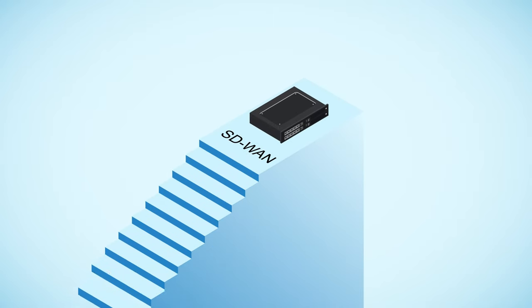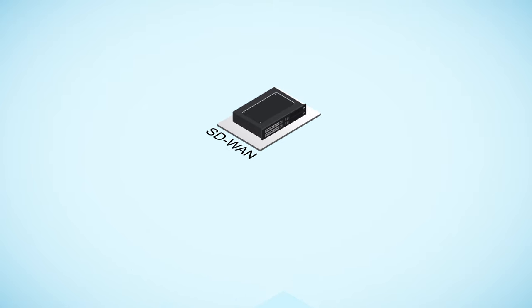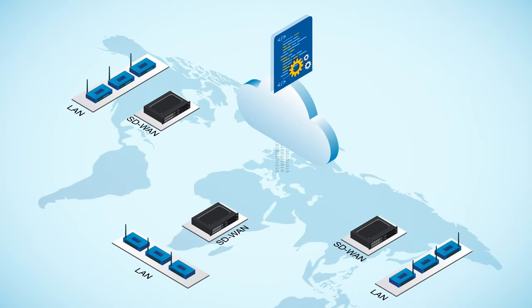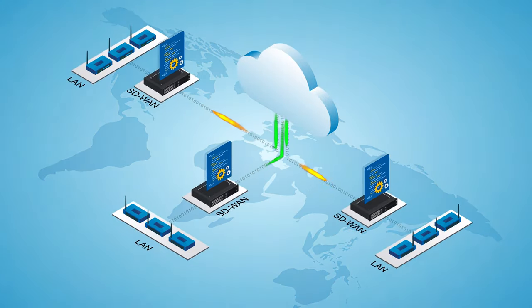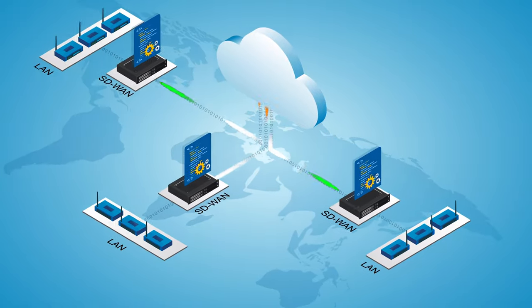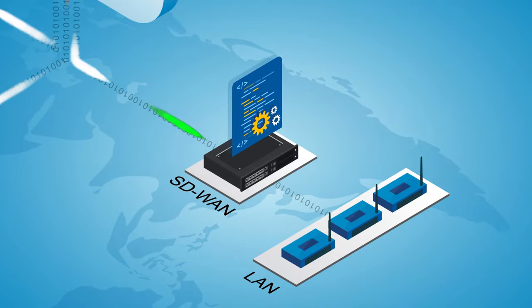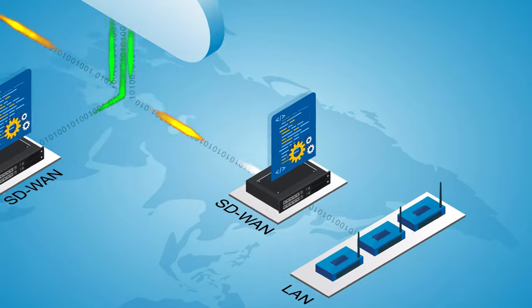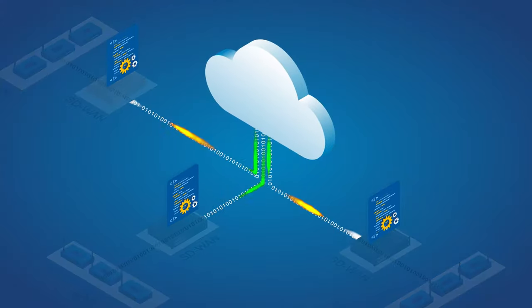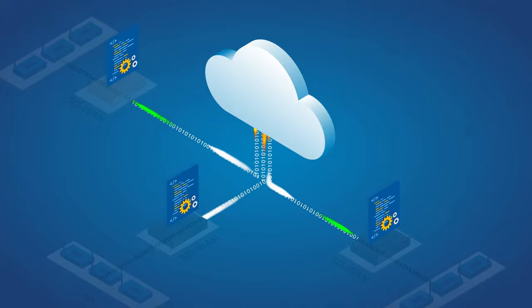SD-WAN is frequently described as the latest evolution of wide area networking infrastructure, but it's really a peer-to-peer software application that runs in the footprint of WAN edge routers and implements a virtual WAN over physical internet and/or private IP network transports. From the outside, it looks and behaves exactly like a traditional IP WAN with the SD-WAN peers emulating routers, but on the inside, between the peers, there's a lot more going on. SD-WAN peers exchange more information than just data packets.